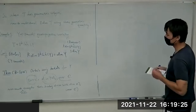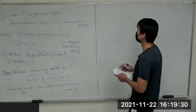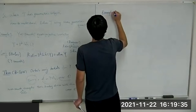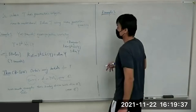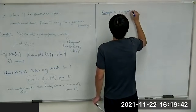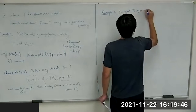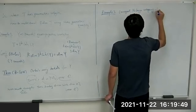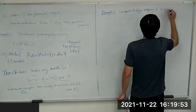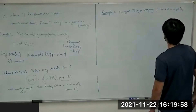This is the first example. I'll talk about the proof of this theorem later. Another example is the wrapped Fukaya category of Weinstein manifolds.